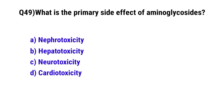Question number forty-nine: What is the primary side effect of aminoglycosides. The correct option is A, nephrotoxicity.